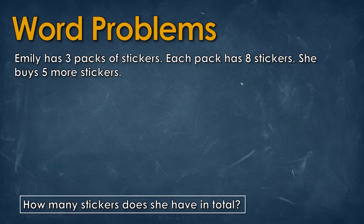Let's take a look at this word problem. There are a couple things we can do to make reading these word problems a little bit easier to understand. One thing we could do is read it out loud — by reading out loud, we can understand it a little bit better. If you're in a classroom, you could always whisper it to yourself, kind of mumble it. You don't have to say it really loud, or if that's not possible, just read it in your head.